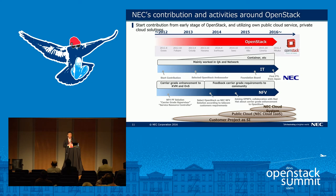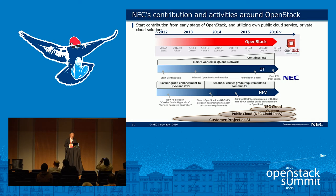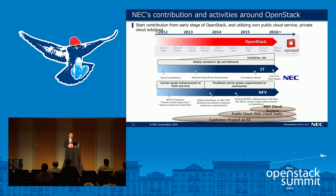Our contributions and activities in OpenStack: we started contributing to the OpenStack community in 2012 at a very early stage. In these years, we have utilized OpenStack as a public cloud service called NC CloudEase and communicated with customers using OpenStack as private solutions. We have also collaborated with our customers in the OpenStack communities. In telecom and NFV, NFV has become a big wave and we already have large telecom customers globally. We have started using OpenStack as VIM — Virtual Infrastructure Manager — as a core component over these two or three years.